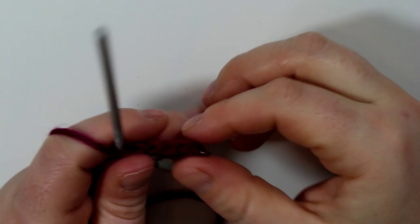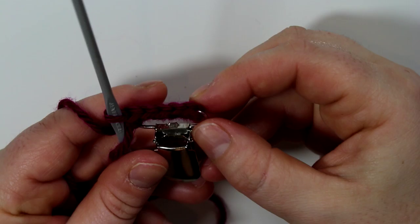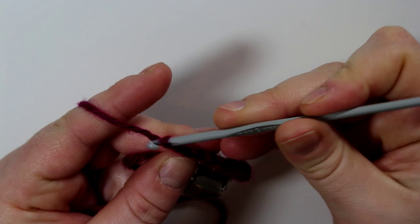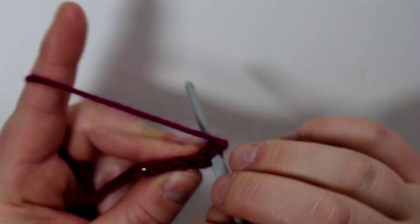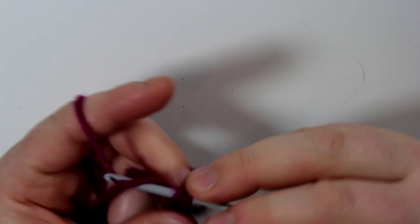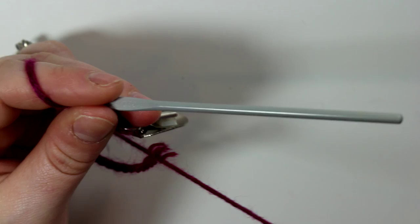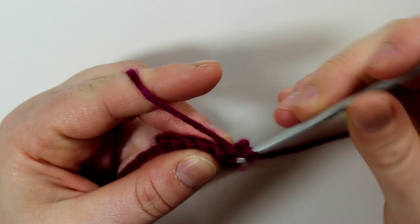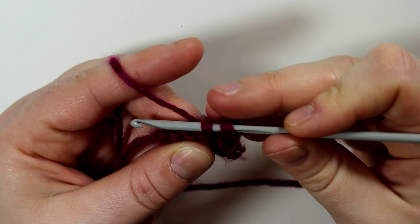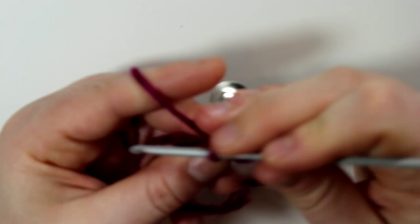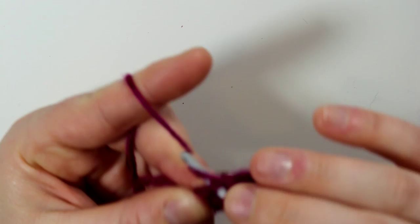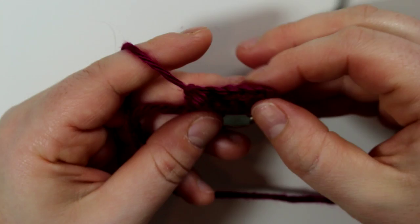Then you're going to chain one and then turn your work, and then you're going to go ahead and repeat the previous row and do five single crochets along. Your chain one will count as your sixth crochet. When you get to the end of that row then you're going to again chain one and then turn your work again. So in total I did four rows and then I started on the pattern.